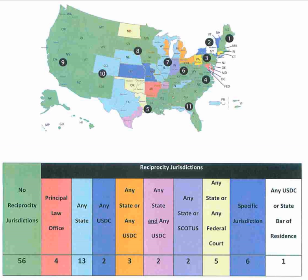In contrast to the Supreme Court, which was established by Article III of the Constitution, the district courts were established by Congress. There is no constitutional requirement that district courts exist at all. Indeed, after the ratification of the Constitution, some opponents of a strong federal judiciary urged that, outside jurisdictions under direct federal control like Washington, D.C. and the territories, the federal court system be limited to the Supreme Court, which would hear appeals from state courts. This view did not prevail, however, and the first Congress created the district court system that is still in place today.